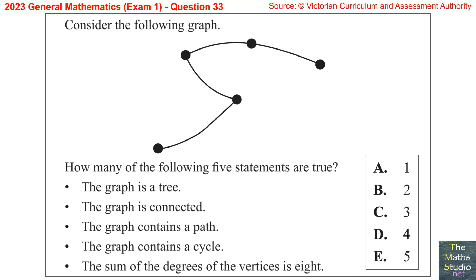Question 33. Consider the following graph. How many of the following five statements are true?